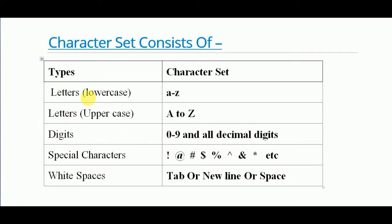For letters, lowercase letters are used in the character set of C — all 26 lowercase small letters from A to Z, like A, B, C, D, and so on. Next comes uppercase letters. Same as the lowercase, all 26 uppercase letters A to Z are used in the character set of C.